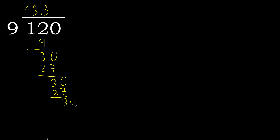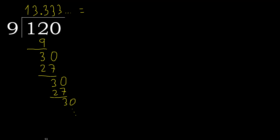Repeat — therefore repeat, repeat. Therefore 3 repeats. 120 divided by 9 is: after the point, 3 repeat. Therefore the answer is like this, with 3 repeating.